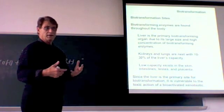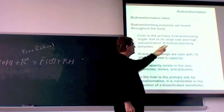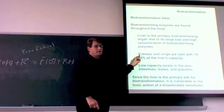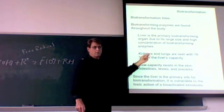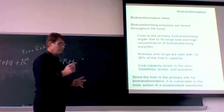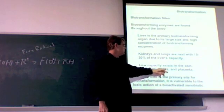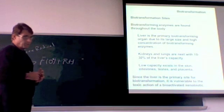It's big, has a large size, and also a high concentration of biotransforming enzymes. There are some in kidneys, some in the lungs, some in all tissues, skin. You can find it everywhere. Low capacity in the skin. The liver is the primary site.